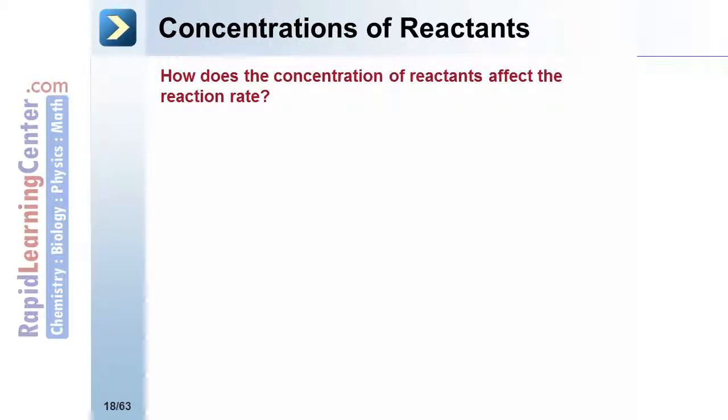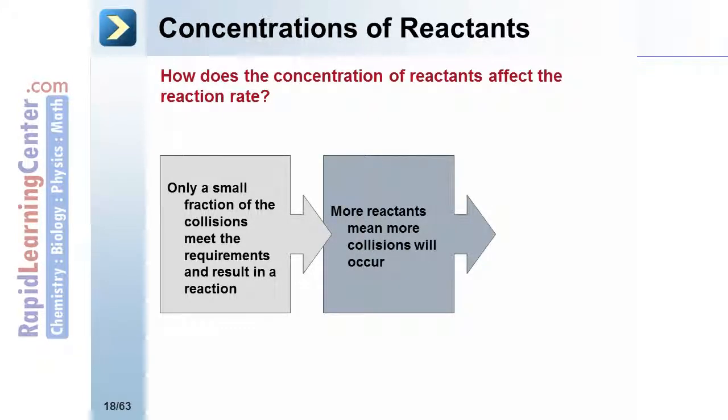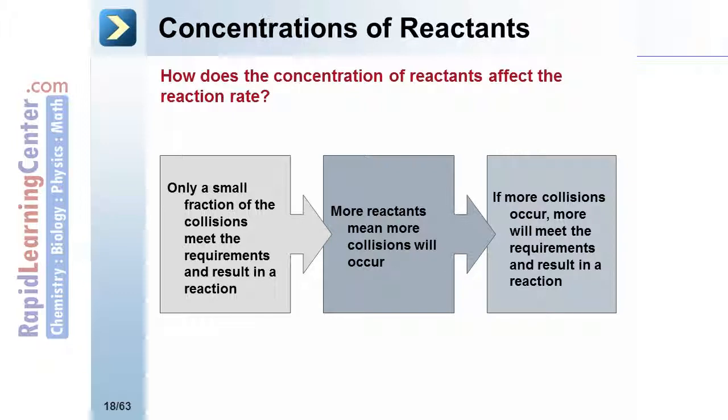Reactant concentration also affects reaction rate. Only a small fraction of collisions are successful. More reactants means more collisions. More collisions means more successful collisions. As concentration increases, rate also increases.